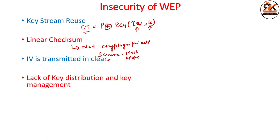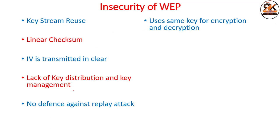There is also a lack of key management and key distribution — nothing is defined in the 802.11 standard about how the key is managed or distributed. Furthermore, there is no defense against replay attacks: once an attacker records a WEP-encrypted message, it can be illegally reused multiple times to gain access. WEP uses the same key for encryption and decryption, so once the key is compromised it can be used for subsequent sessions.